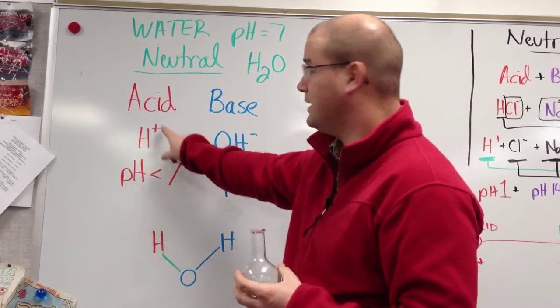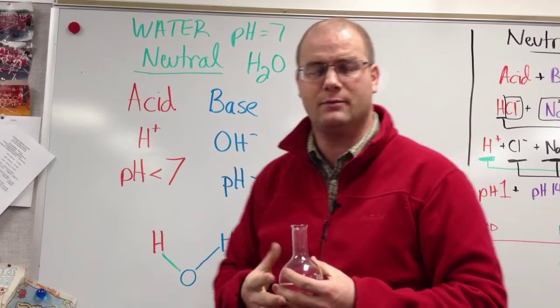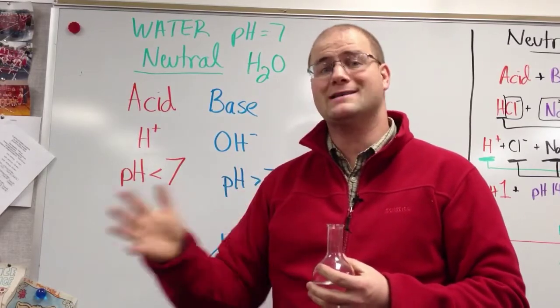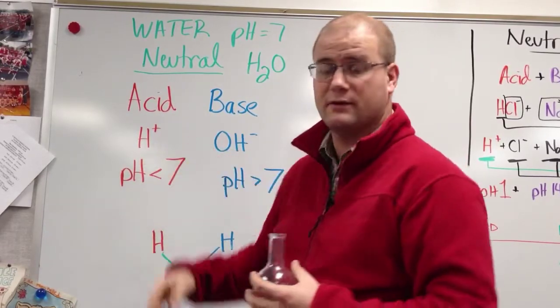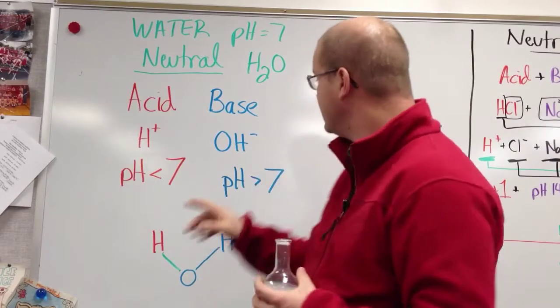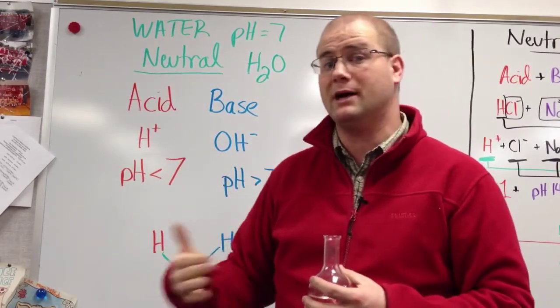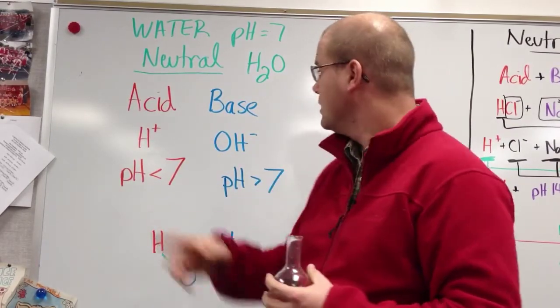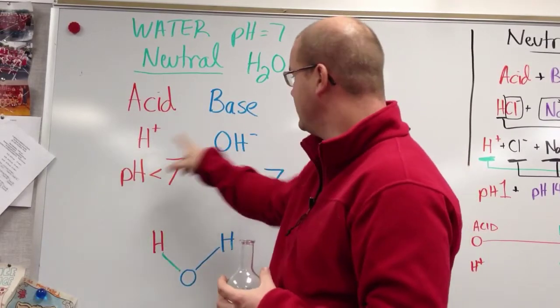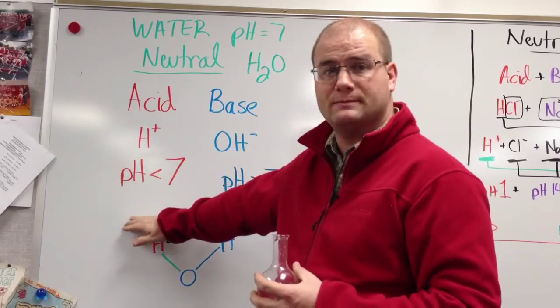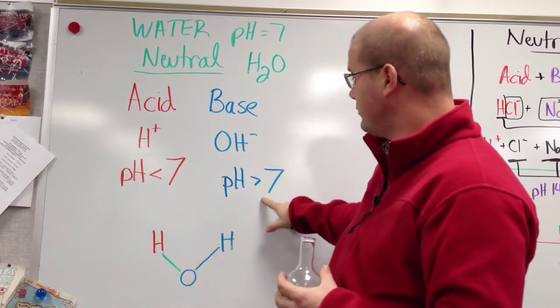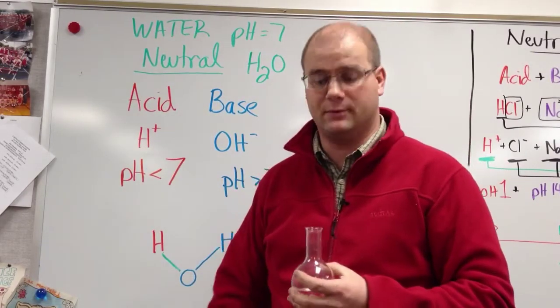Now that ion is hydrogen ion. We call it an ion because it has lost an electron, which is why it's positive. Now a base, on the other hand, has hydroxide or OH minus. It's gained an electron. And so a base as we list is blue, acid is red. And a base is going to have a pH of greater than 7, where an acid is going to be less.